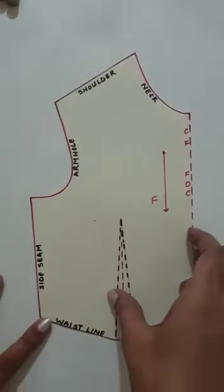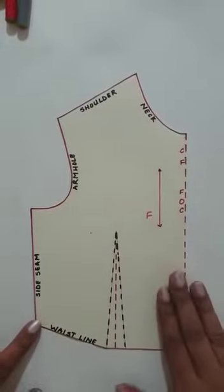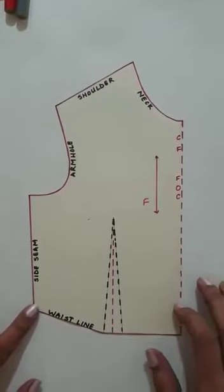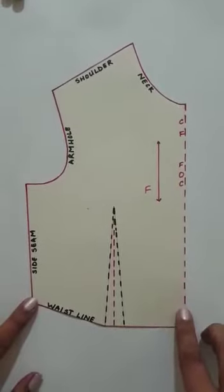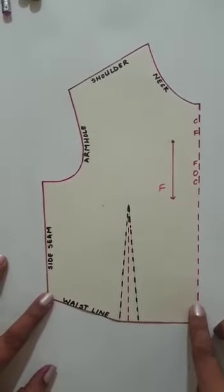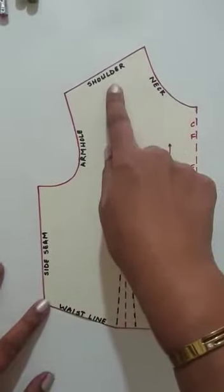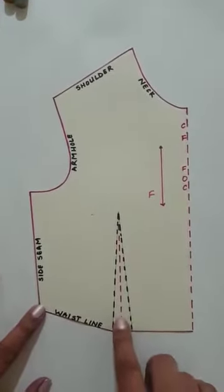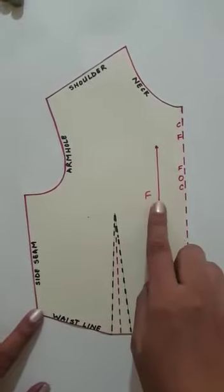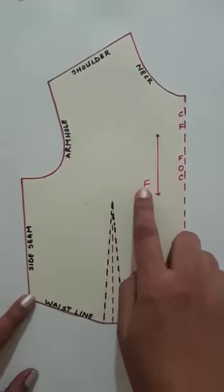Here I have the basic block which I have cut into shape. Now on this I have done the basic labeling as we have discussed in the previous classes. So this is my center front line which is supposed to be FOC, my neck, shoulder, armhole, side seam and waistline along with the dart marked. This is my straight grain front piece.